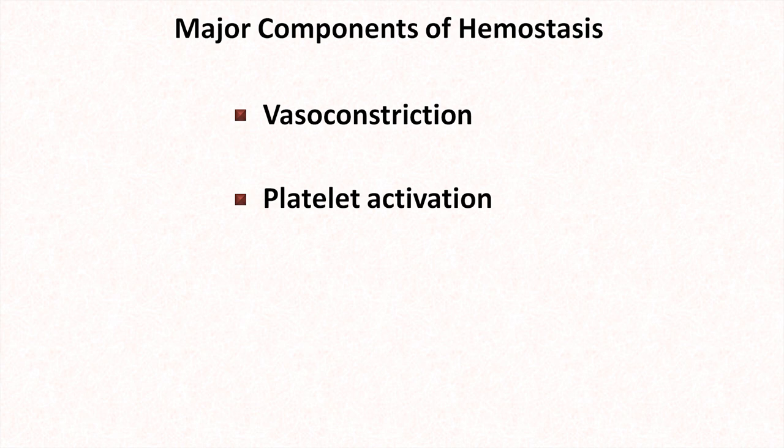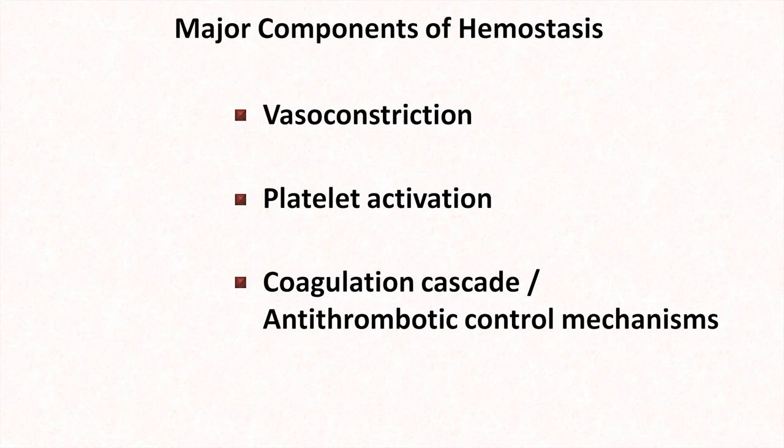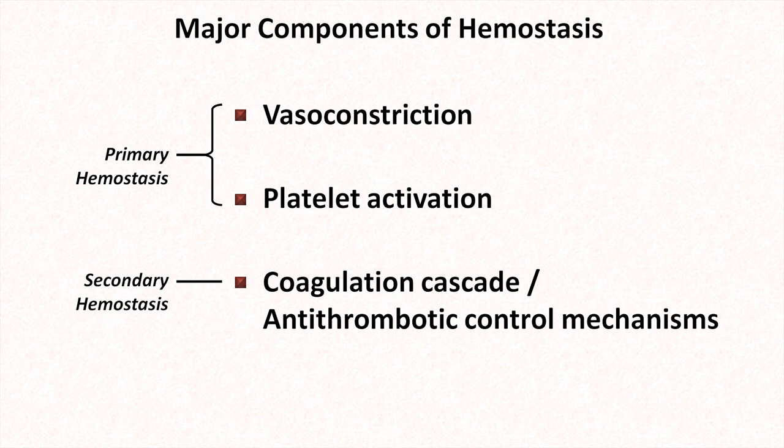After vascular injury, the very first response, which is essentially instantaneous, is local vasoconstriction. This is immediately followed by something called platelet activation, which consists of a series of changes in the expression and activity of certain receptors on the platelet membrane, as well as changes in platelet shape. A few minutes later, the coagulation cascade kicks in simultaneous with antithrombotic control mechanisms to prevent coagulation from running away too far. Since they occur extremely rapidly, the processes of vasoconstriction and platelet activation are sometimes lumped together under the term primary hemostasis. The coagulation cascade is referred to as secondary hemostasis.